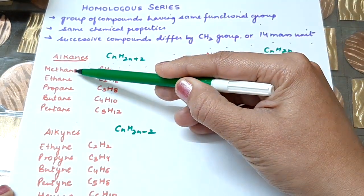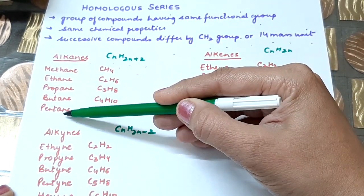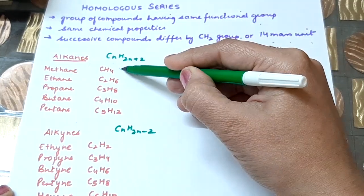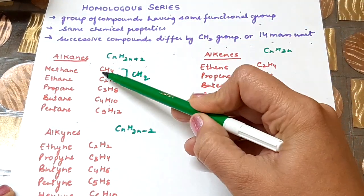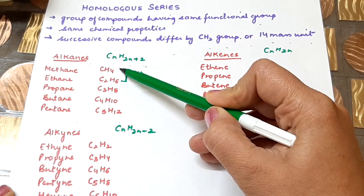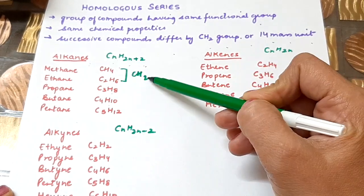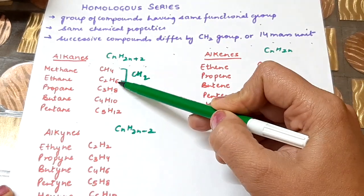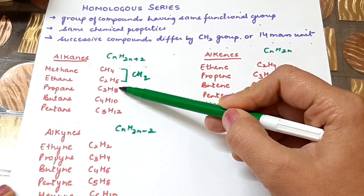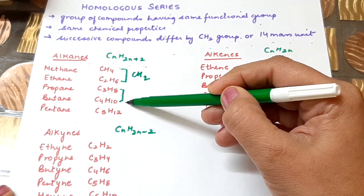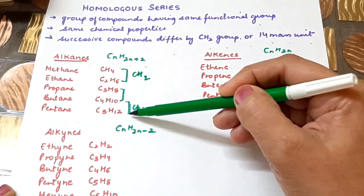Now, successive compounds are methane and ethane, ethane and propane, propane and butane, butane and pentane — the difference is CH2. That is, CH4 plus CH2 gives C2H6. Ethane and propane also differ by CH2, same for propane and butane, and butane and pentane. So this is the homologous series of alkanes.